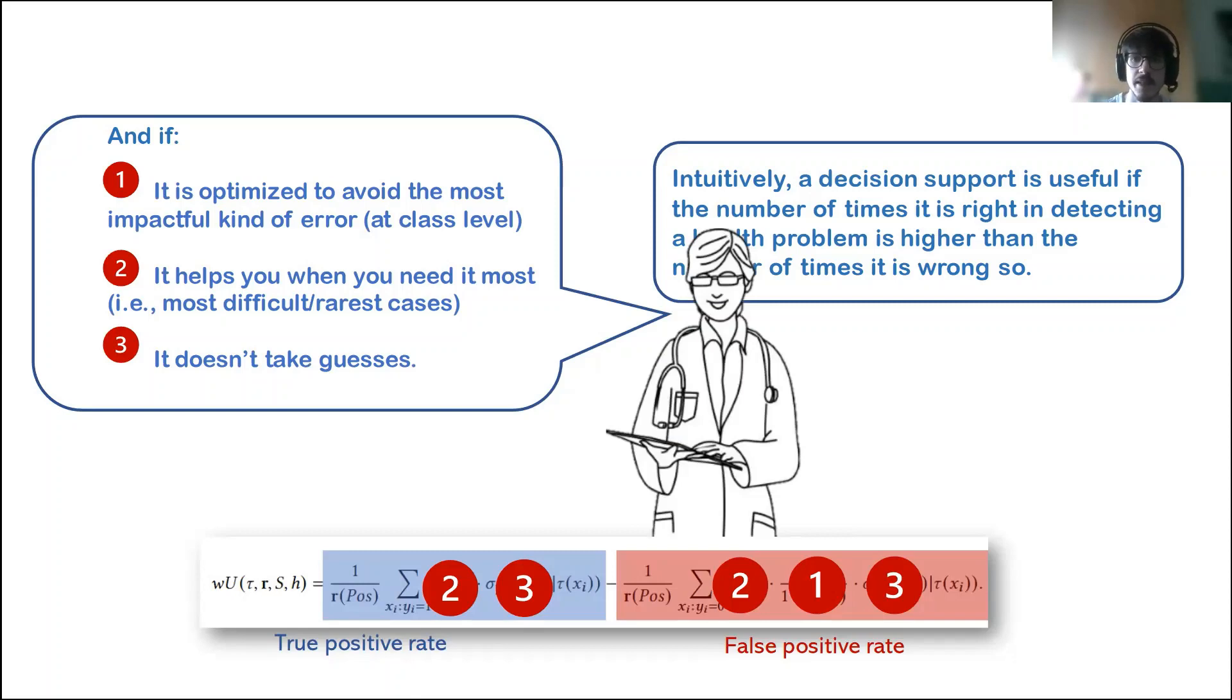The second property is that the artificial intelligence system should be more helpful and more useful on the cases where you need it most. For example, on the cases that are considered more difficult and are more difficult to automate or on the rarest cases on which the decision maker is less familiar. The third property is that the artificial intelligence system should not take guesses and so its decision should be informed and confident enough.